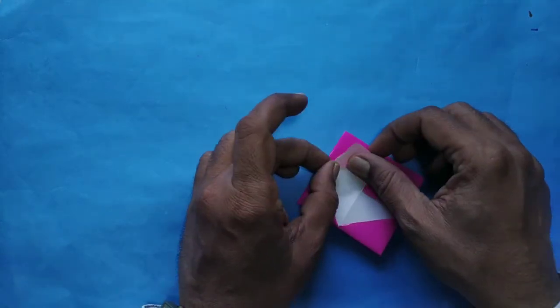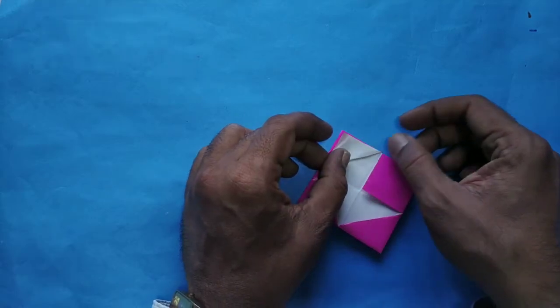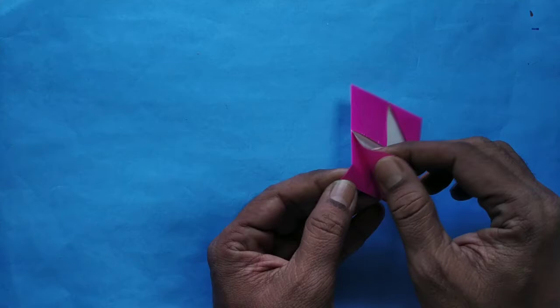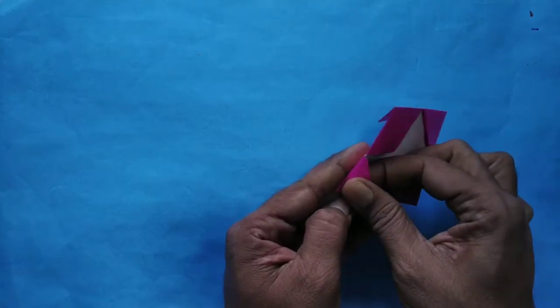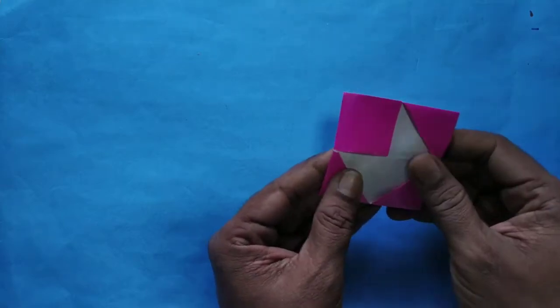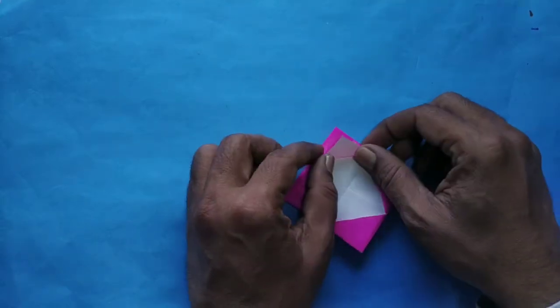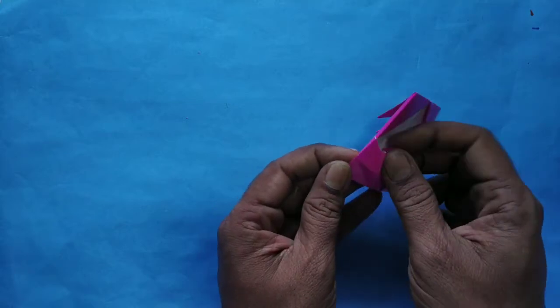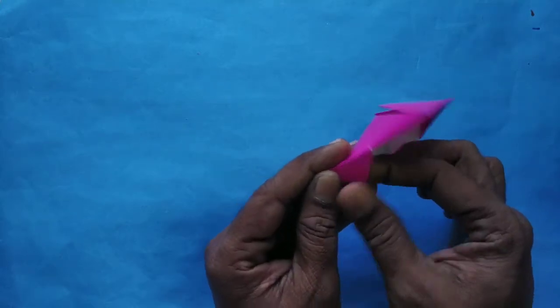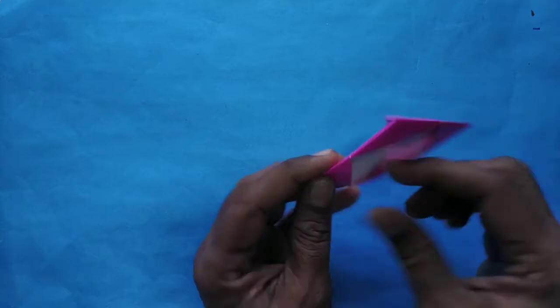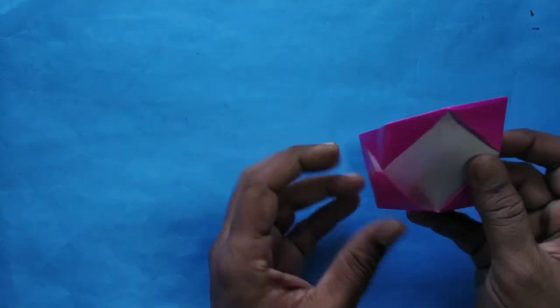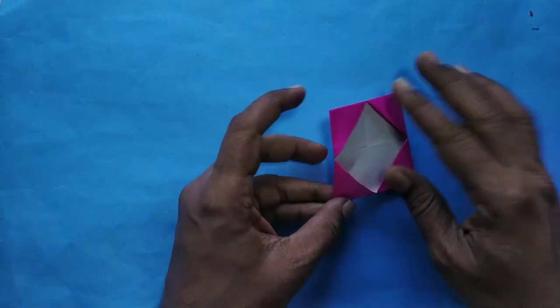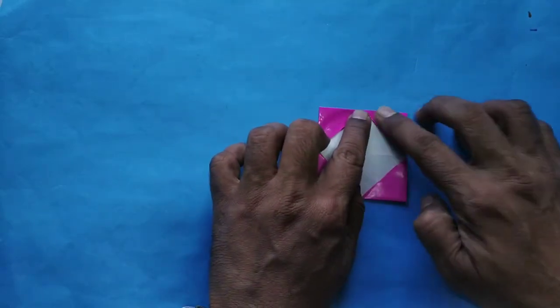This side also, same way you have to do, fold it inside. Do this for all remaining sides, folding them inward. This is the photo frame.